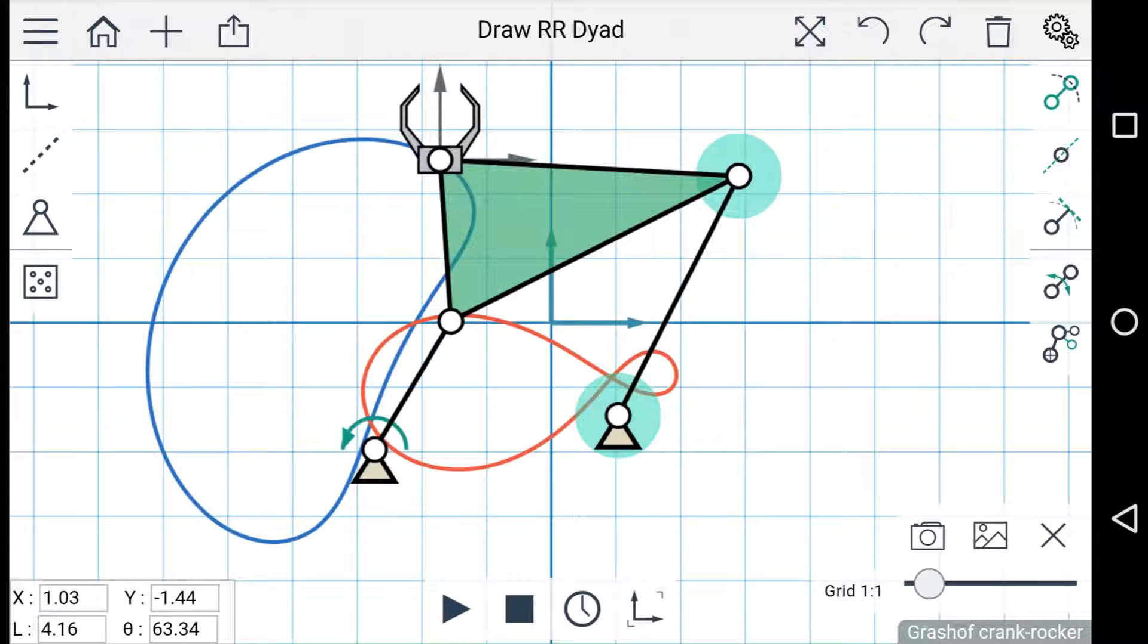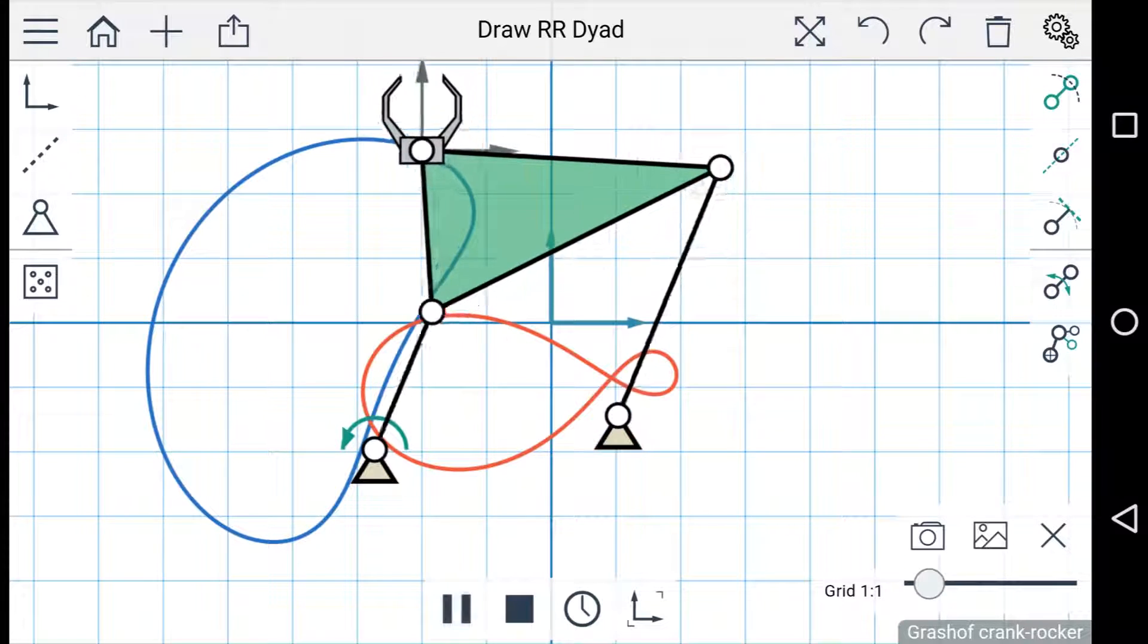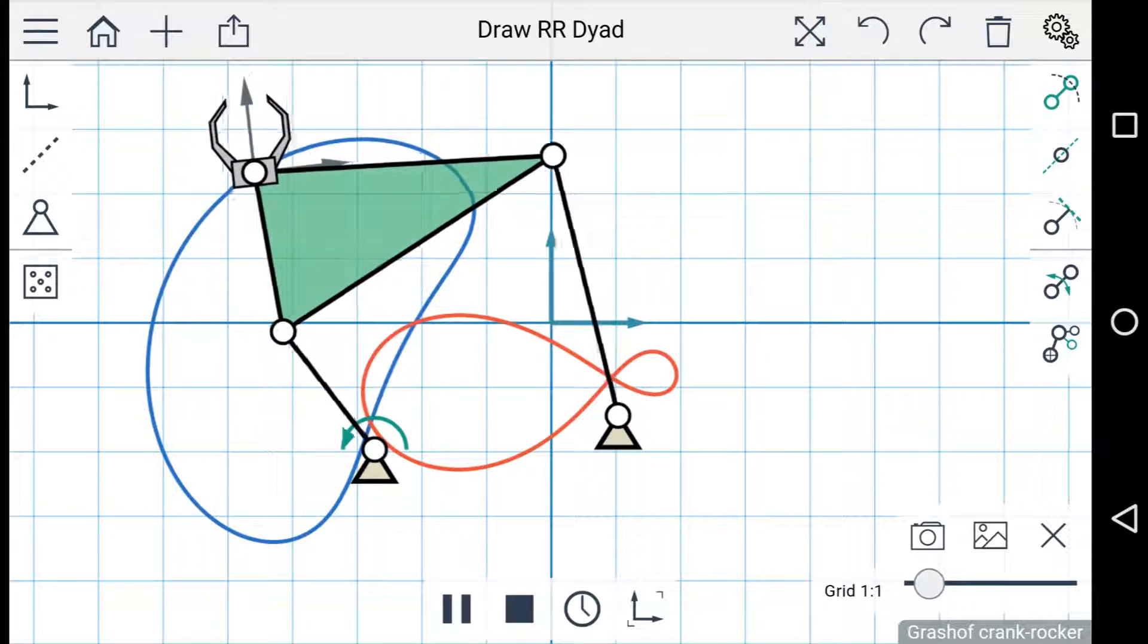You'll notice at the bottom of the screen, the playback menu has appeared, and you can use this to animate the linkage. Just press play, and the driving link will begin to turn.